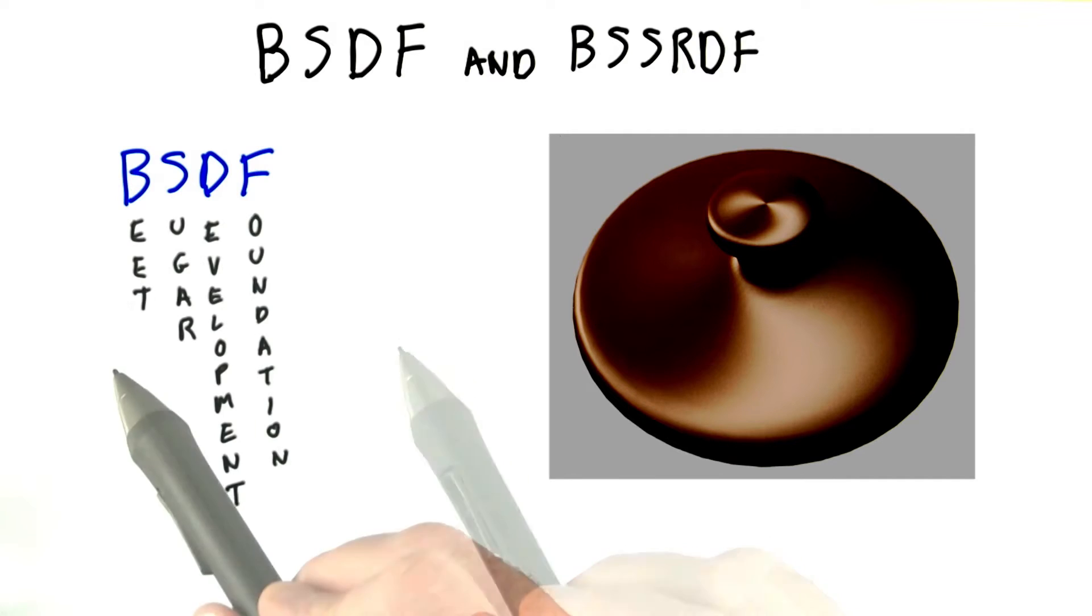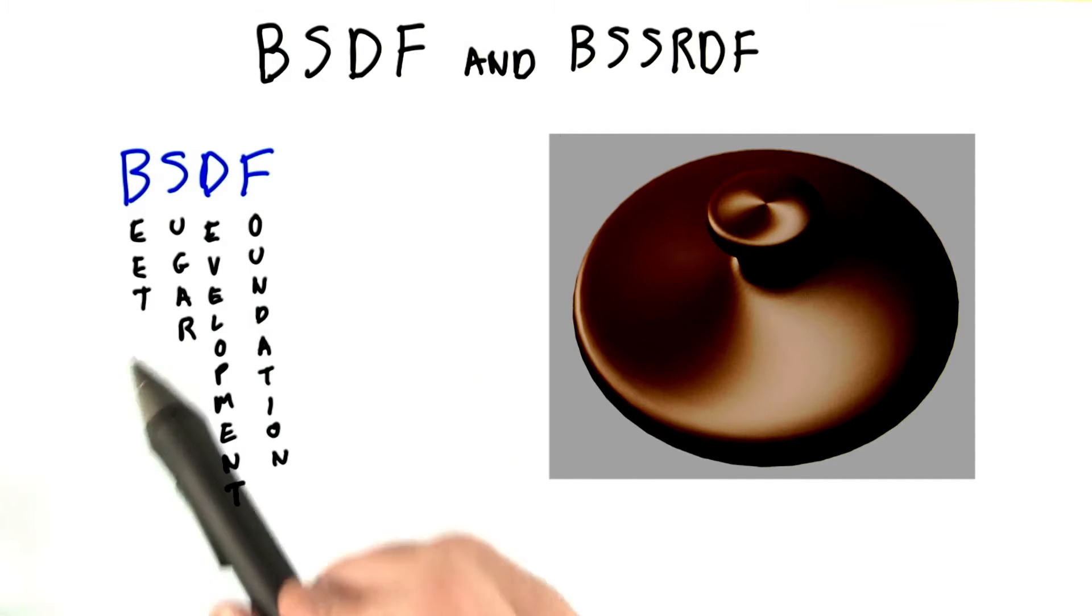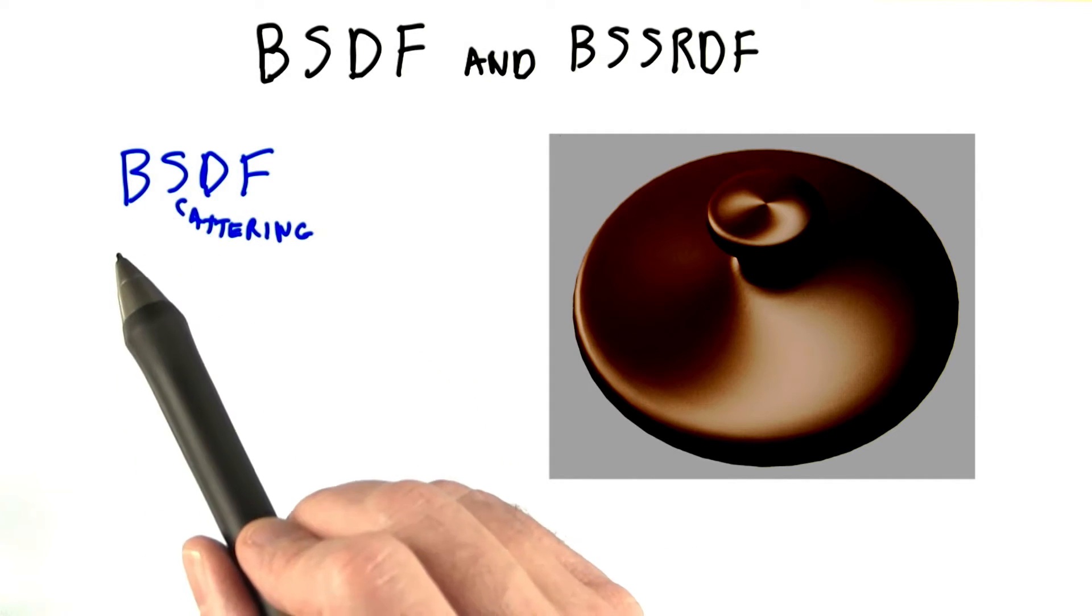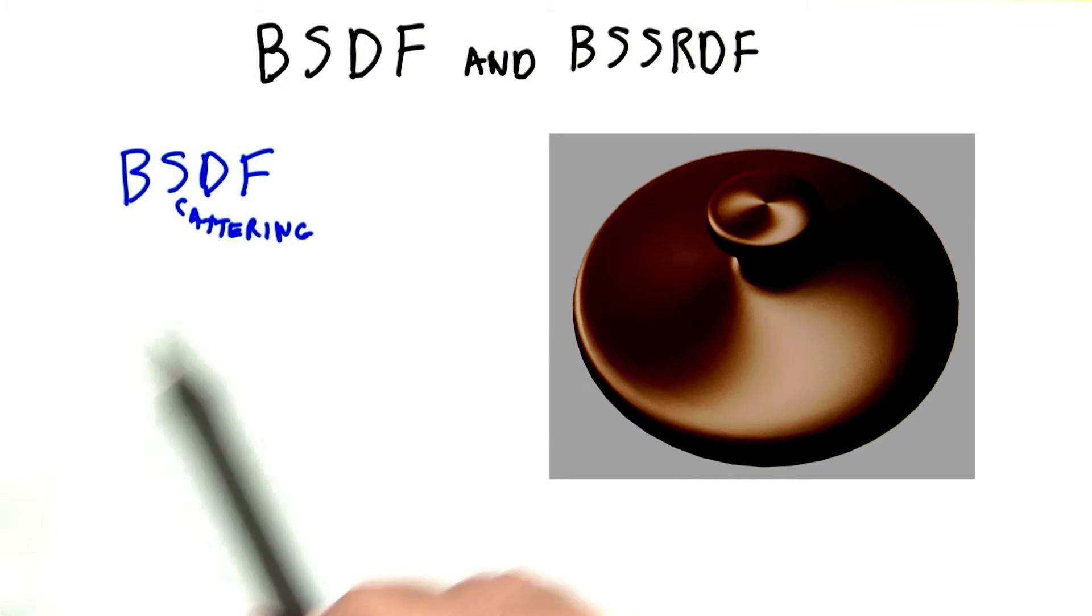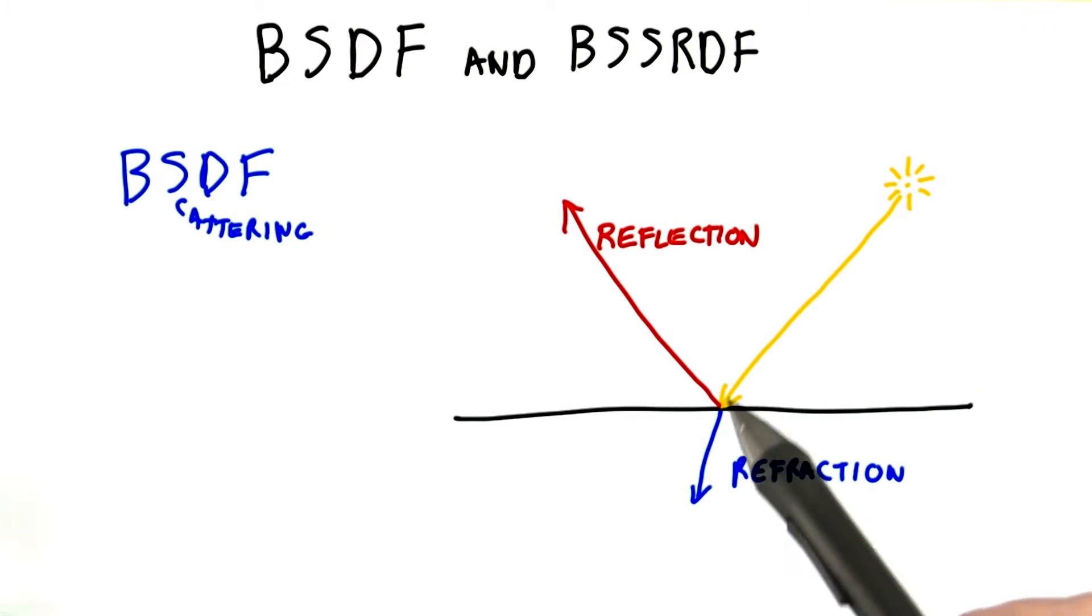BRDFs are just the start. There's also the BSDF, the Beet Sugar Development Foundation. We're more interested in the bidirectional scattering distribution function. This type of function captures both how light reflects from and transmits through material.